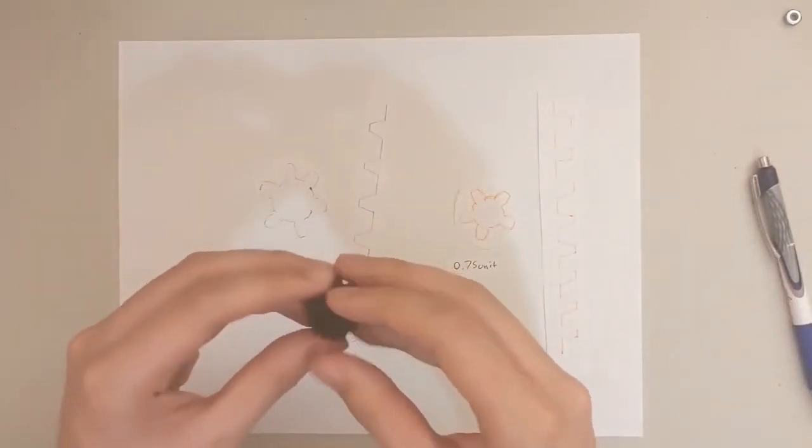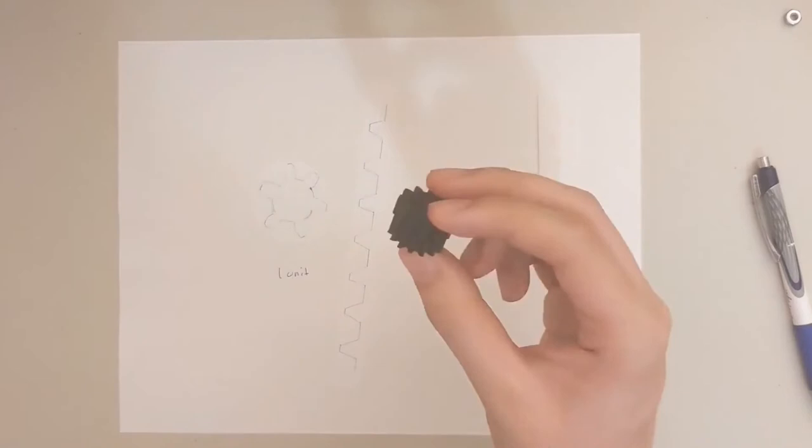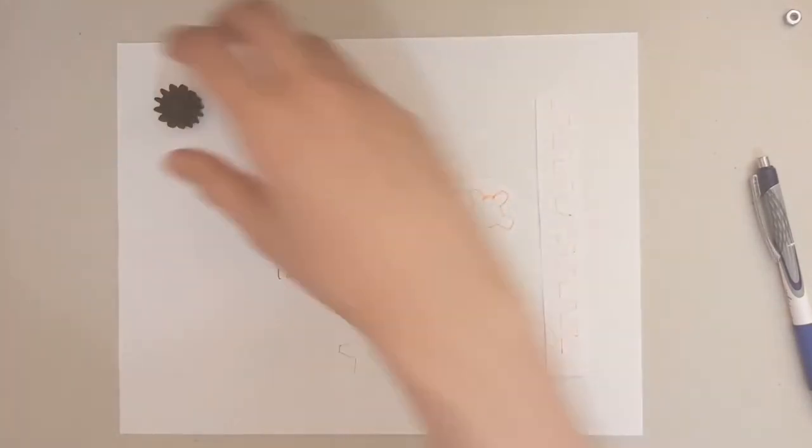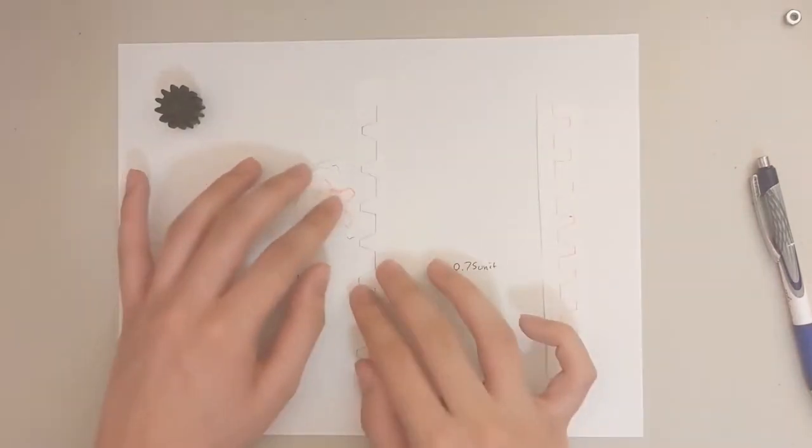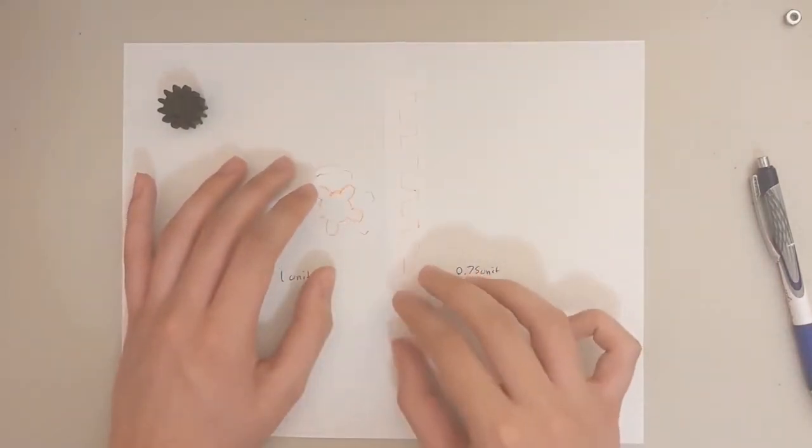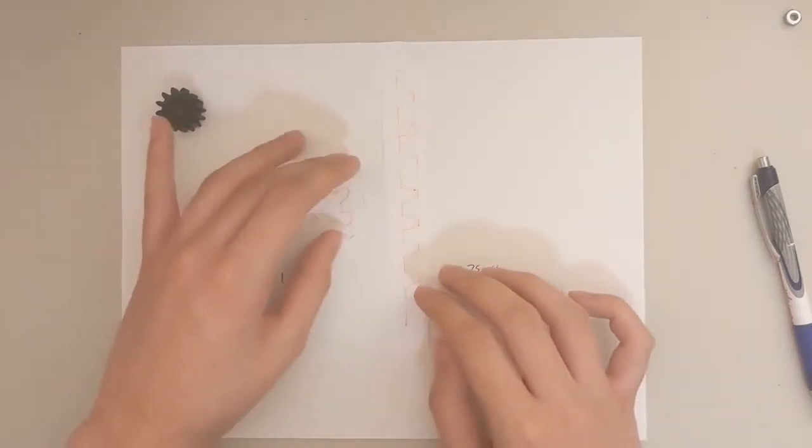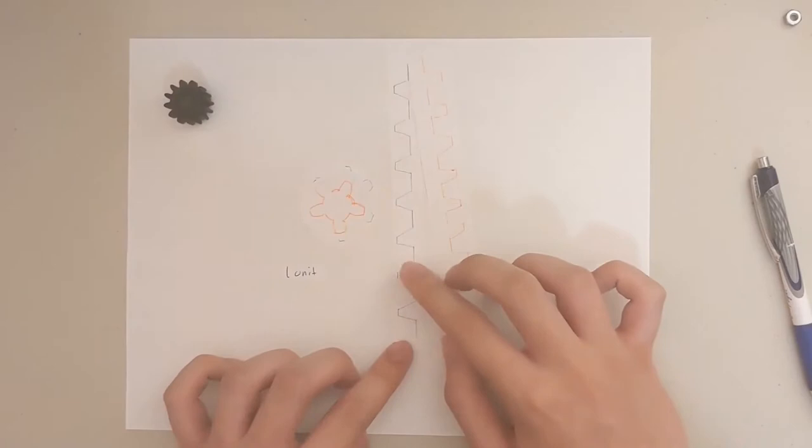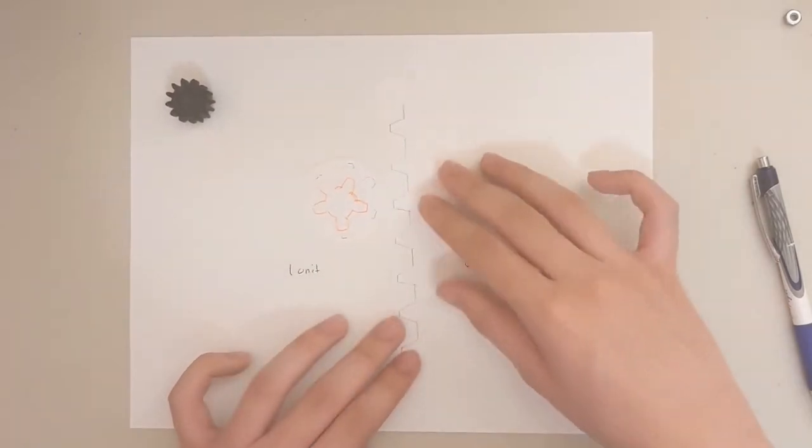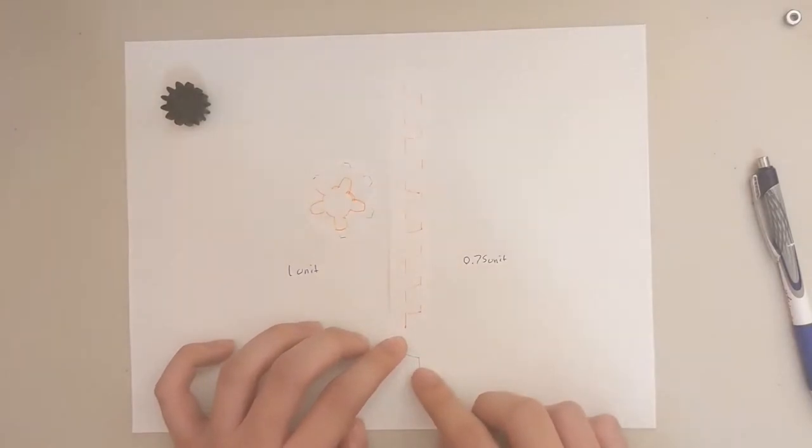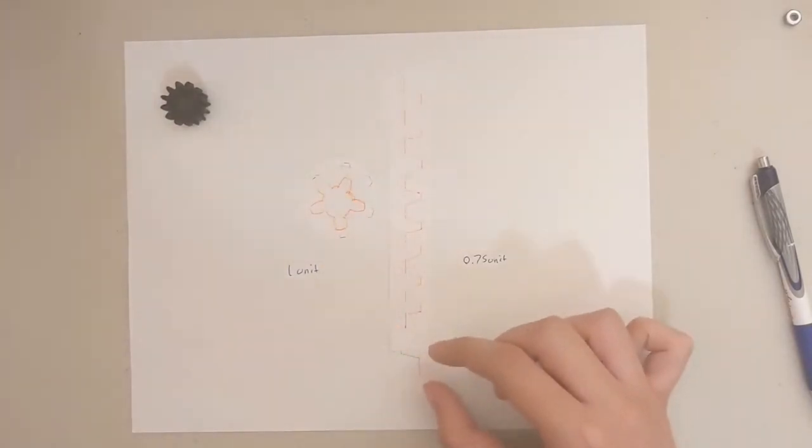Now what happens if we mount the second set on top of the first set? So essentially mounting the two pinion gears together like this - they can't rotate independently, so they rotate together. So if we stack them on top of each other, something like this, and we turn this one full rotation, what will happen is this bottom set will move down one unit and this top set will move down 0.75 units, essentially making a difference of 0.25 units.